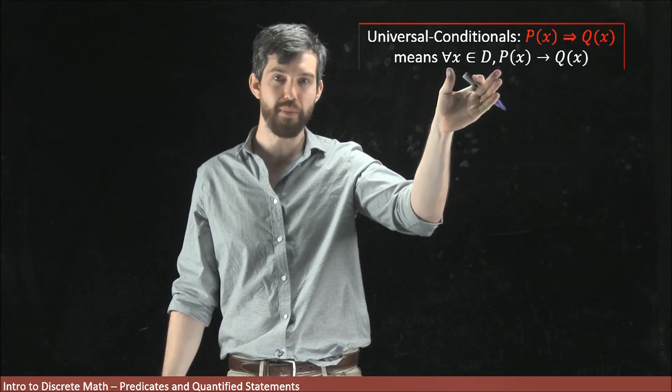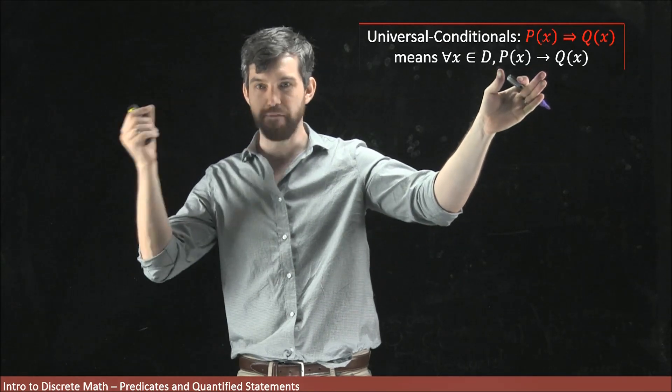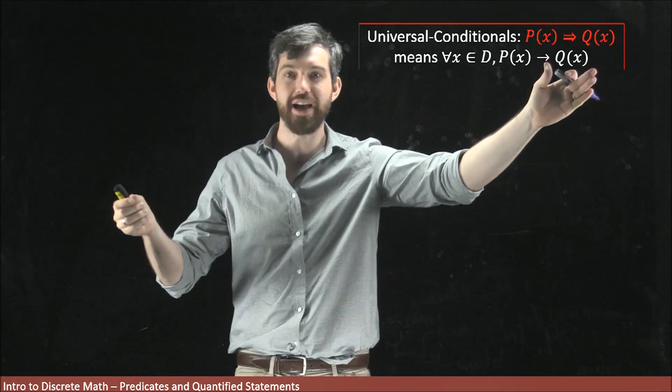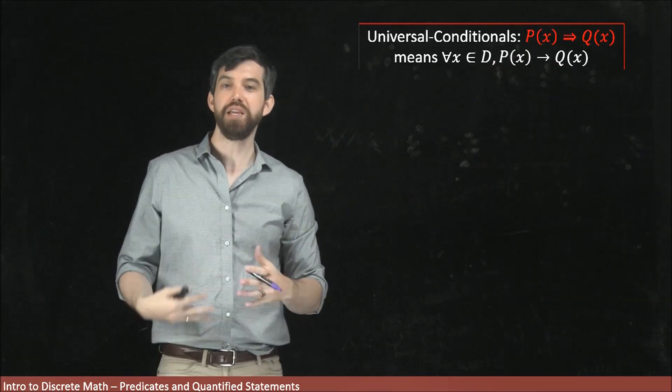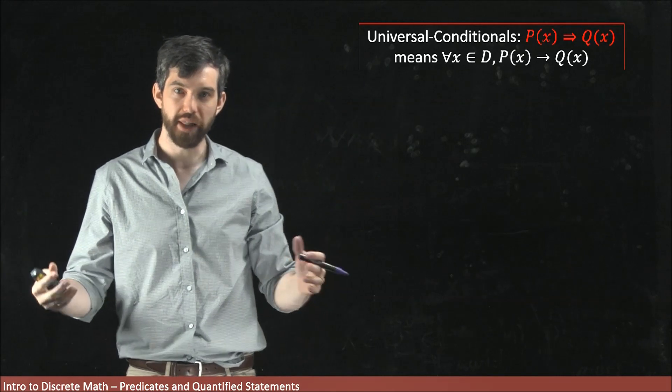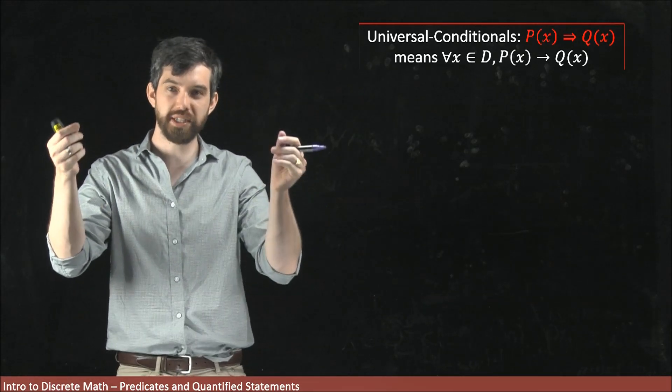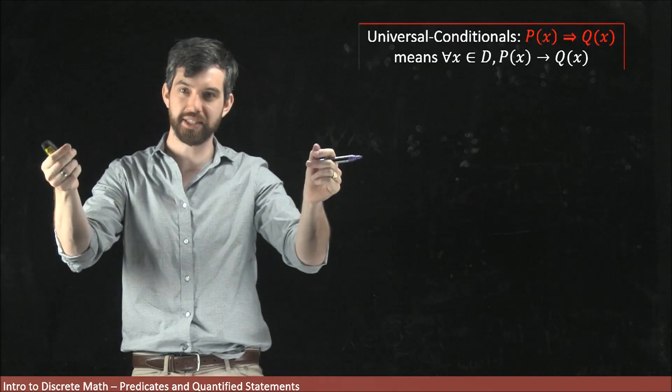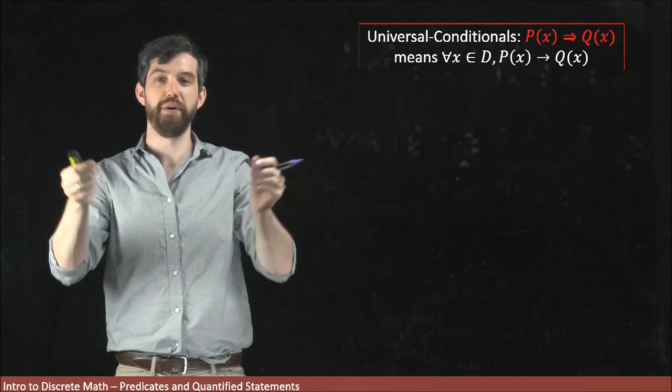for every x inside of my domain, the statement P(x) where I plugged in a specific value of x implies the statement Q(x) for that same value of x. In other words, a universal conditional is just like a normal conditional but where your statements are replaced by predicates and the conditional works for every single input value.